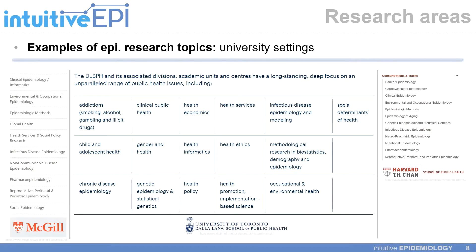To give you a sense of the breadth of epidemiological research being conducted, I wanted to show you screenshots from epidemiology departments at three universities. On the far left is McGill University, where I graduated. We have the University of Toronto, the largest school of public health in Canada. And on the far right, Harvard's School of Public Health.